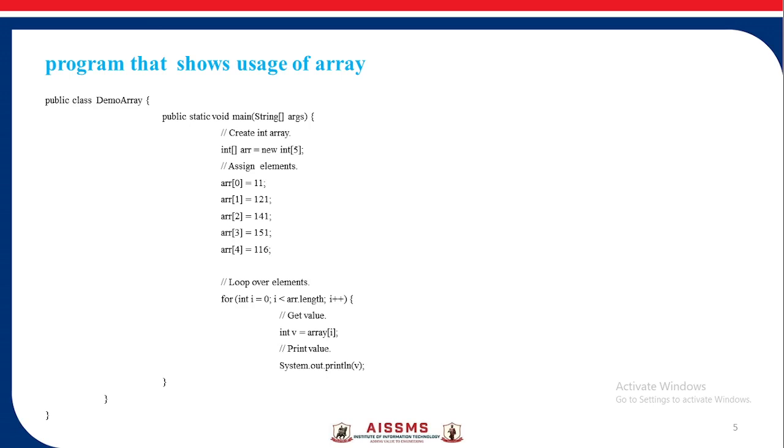This program shows the usage of an array. Here we have firstly created an array, then assigned the values to the array by the indexes. After that we use the for loop and get the value of each element that is present at every index of an array in the variable V and we print that value every time.